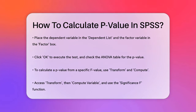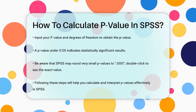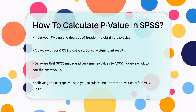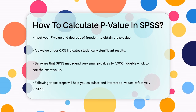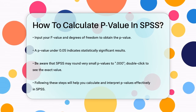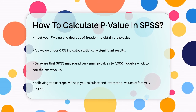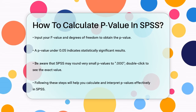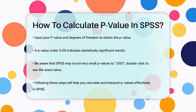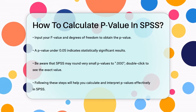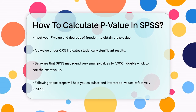In all these tests, the p-value is crucial. It tells you the probability of observing your results, or more extreme, if the null hypothesis is true. A p-value less than .05 is generally considered statistically significant, meaning the data is unlikely under the null hypothesis.